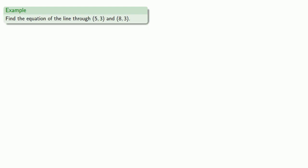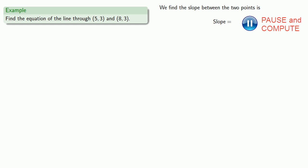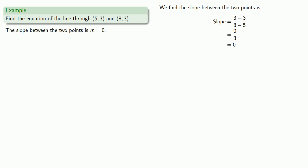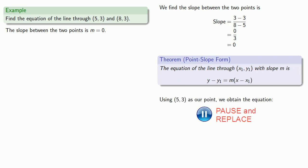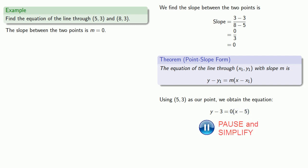Let's find the equation of the line through the points (5, 3) and (8, 3). We find the slope between the two points, which works out to be 0. Putting our equation in point-slope form using the point (5, 3), we can simplify: the term 0 times x minus 5 drops out entirely, and solving for y gives us y equals 3.